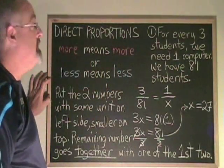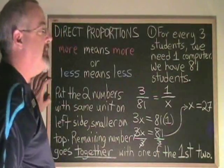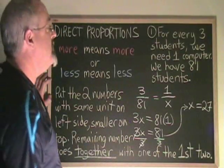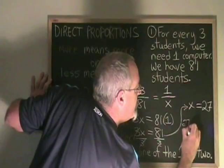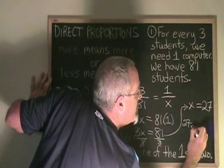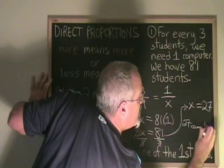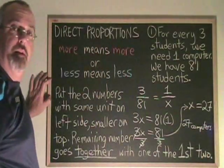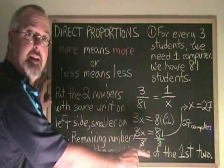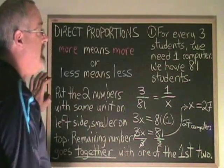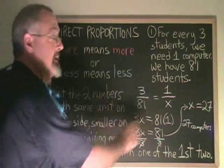Dividing both sides by 3, x is isolated and equals 81 divided by 3, which is 27. The final answer to this problem is we will need 27 computers if we have 81 students. Make sure to give your answer — 27 — with the unit of measure, which in this case is computers. This is how we use the more means more or less means less analysis to make sure we build our proportions correctly and get an answer that makes sense.